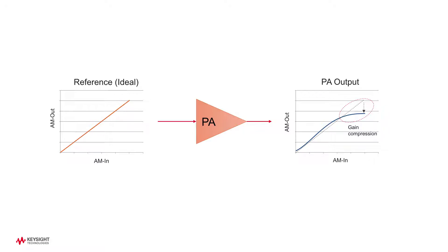In reality, however, PA is nonlinear device. When signal goes through PA, the gain cannot be sustained especially in high power region. The line goes down compared to the straight line. This is called gain compression.